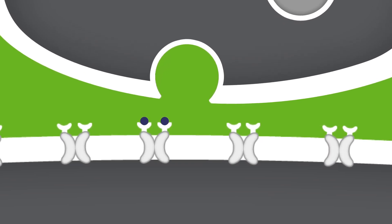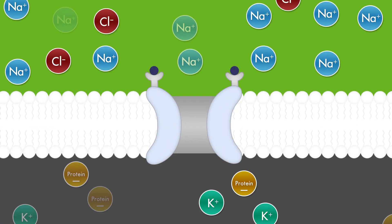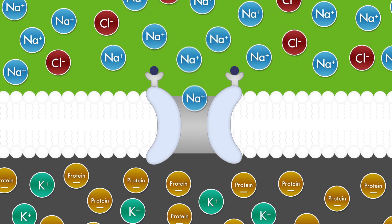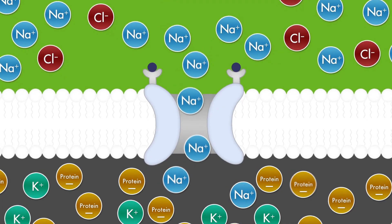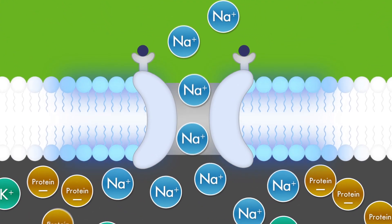One possibility is that this receptor binding will open an ion channel. This binding may also lead to a sodium channel opening, allowing the passage of positive sodium ions into the cell. As these ions are positively charged, the area around the channel will also become more positively charged.